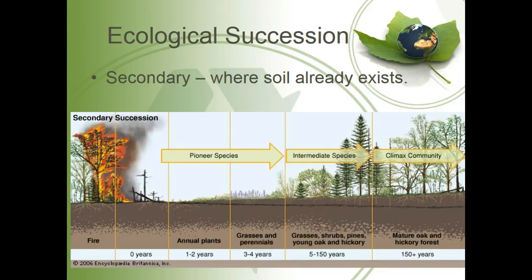Secondary succession is where we already have soil but a fire, landslide, or avalanche comes through and completely devastates the climax community, so we have to start over. We have the same three stages — pioneer species, intermediate species, and climax community — but it doesn't take as many years. Secondary succession takes only about 150 years as opposed to several hundred years for primary succession. You get the same annual plants, grasses, small shrubs, small trees, and eventually the full shade-tolerant climax community. Primary succession happens for the first time; secondary succession happens for the second time. That is chapter four.